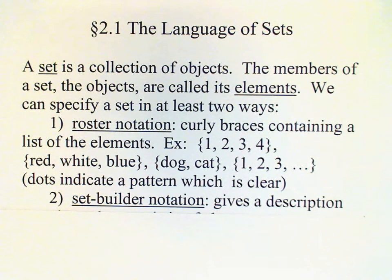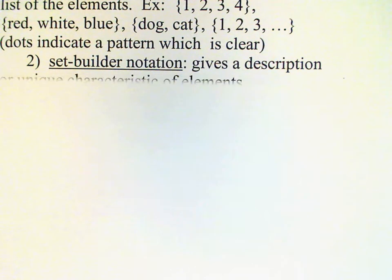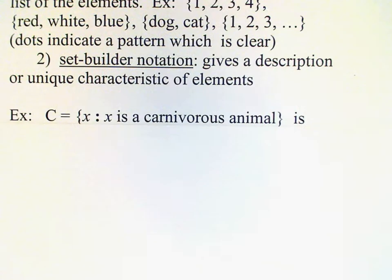The second way that we can indicate a set is to give a description of a typical element. And this is known as set builder notation. So for example, we have a set of animals which are carnivorous, meaning they eat meat.